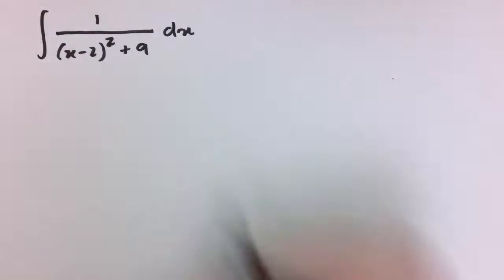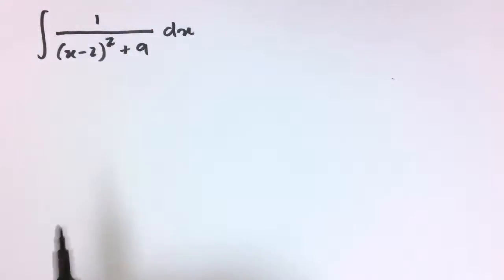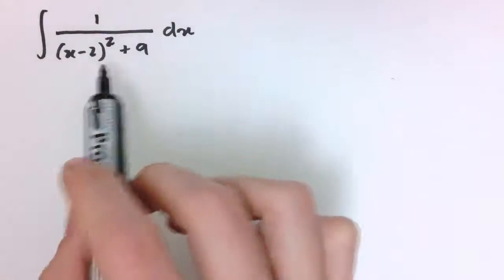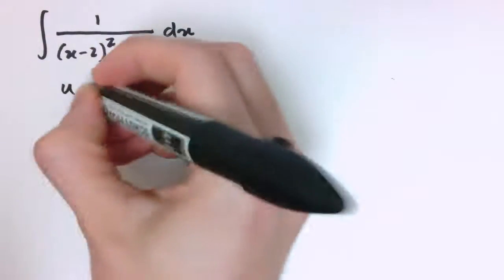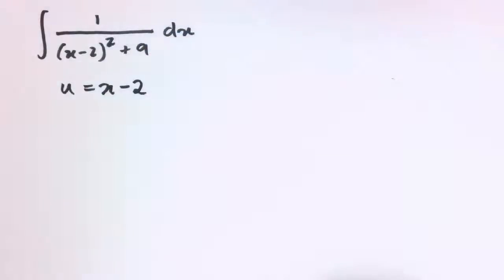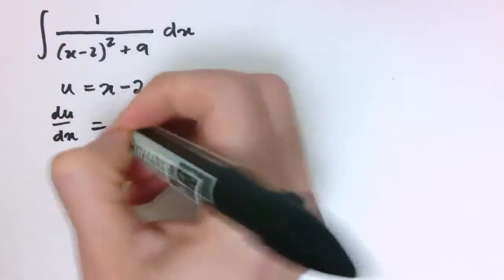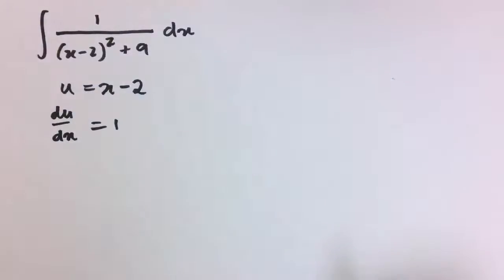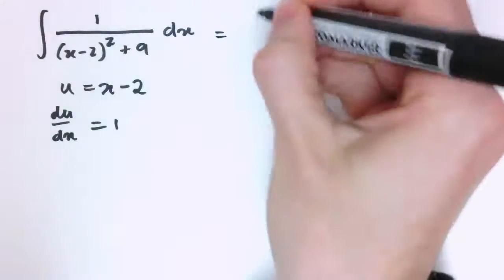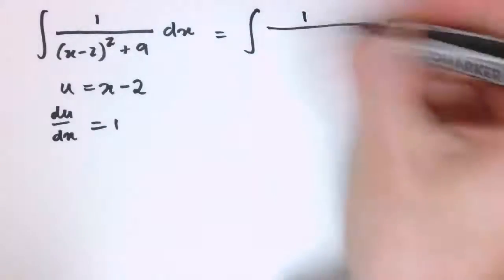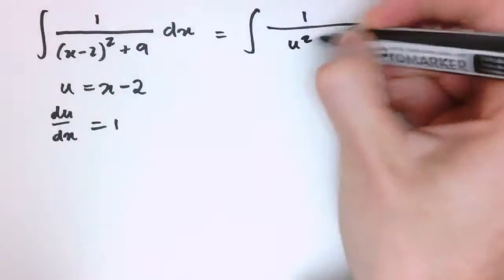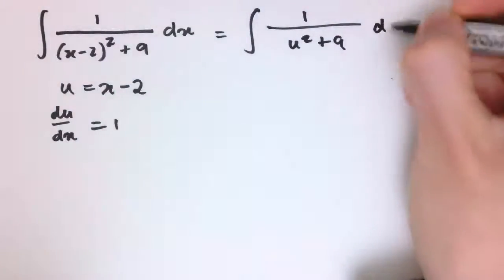This next example then, 1 over x minus 2 squared plus 9, we've got a slightly more tricky denominator to deal with, and the quadratic is in completed square form, and that's going to be useful to us, because here I can substitute u equals x minus 2, and I've got du by dx equals 1, so the conversion factor for the substitution is easy, and when I make the substitution, that gives me 1 divided by u squared plus 9 du.